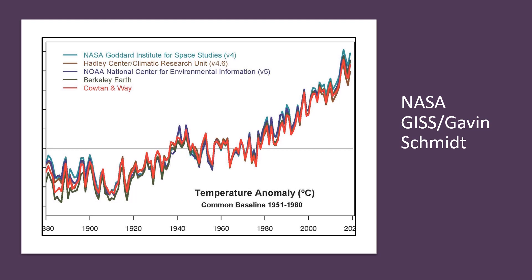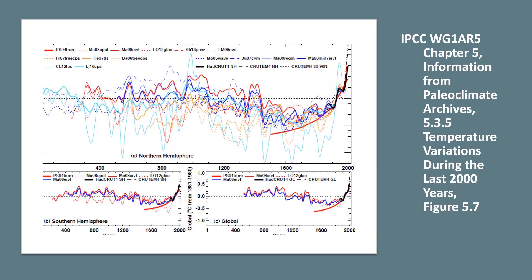NASA uses five sources of global average temperature data. From the five, we will use the Hadley Center data, as it is in fact the only data source that covers the entire period 1850 to 1900. The IPCC uses the same data source.